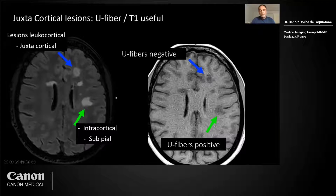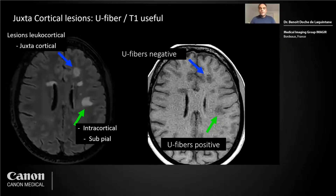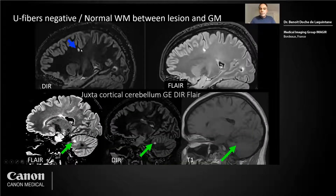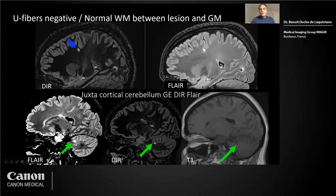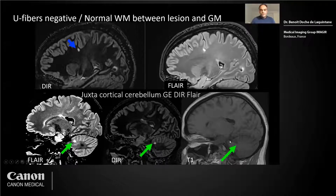I will focus on the U-fibers for the juxtacortical lesion and the use of DIR, double inversion recovery, and FLAIR. Here you see a juxtacortical lesion with normal white matter interposed between the lesion and the gray matter — it's juxtacortical but FLAIR-negative. Here is an example in the cerebellum where the juxtacortical lesion is totally close to the gray matter, with no white matter interposed. With the DIR you have good resolution to see that. The gradient echo can also help in this case.